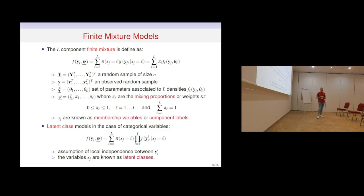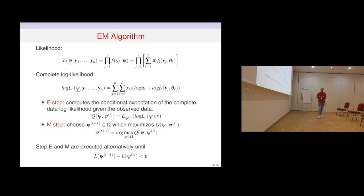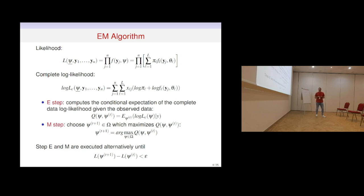It is important to observe that in this context, not only theta_1 through theta_L, the parameters associated with the density, but also the mixing proportions are parameters to be estimated. We write the log-likelihood of the model, and with the introduction of the latent variable sets S_J, this is known as the complete log-likelihood. We can use a maximum-likelihood approach to estimate the parameters through the expectation-maximization algorithm. The EM algorithm is an iterative algorithm involving two steps: the E-step computes the conditional expectation of the complete data log-likelihood given the observed data, and the M-step is a maximization step that finds the parameters maximizing that quantity.